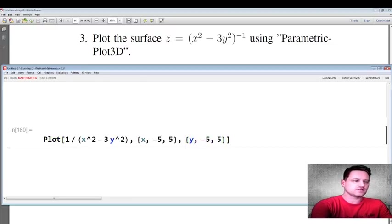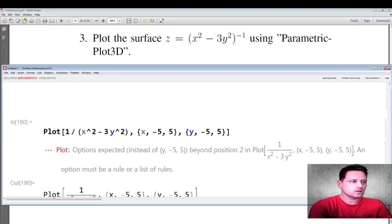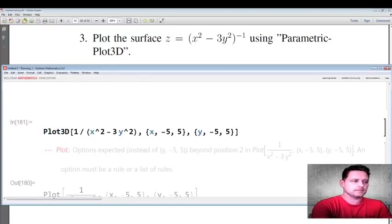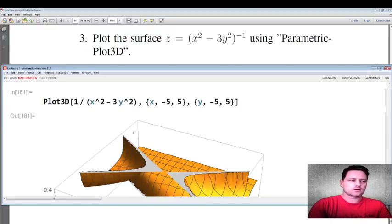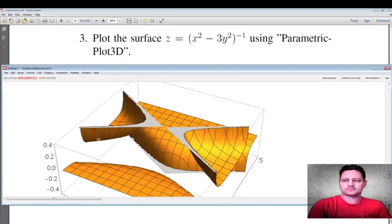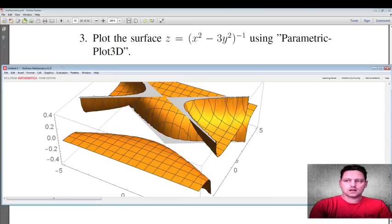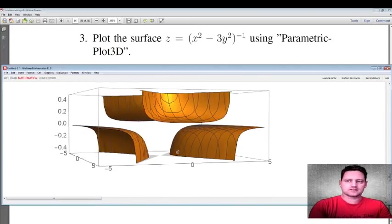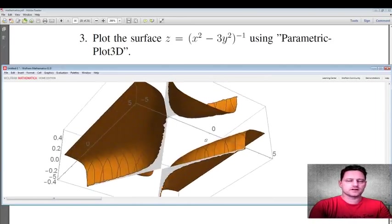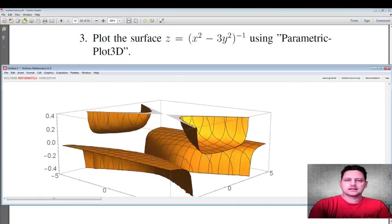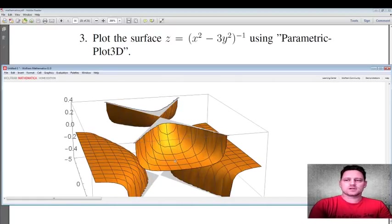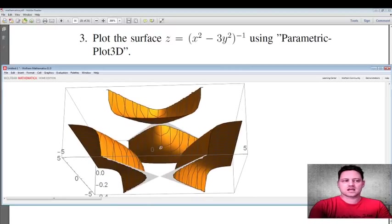Okay, shift and enter. What's wrong with this? We need to put Plot3D. Okay, and now we have an image of this surface. Let's move it around and see what we have. Now it is only plotted within this specific range.